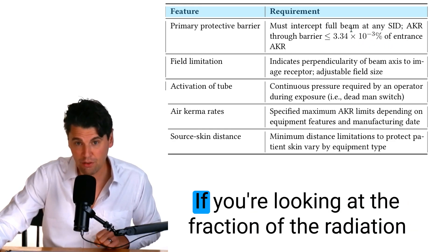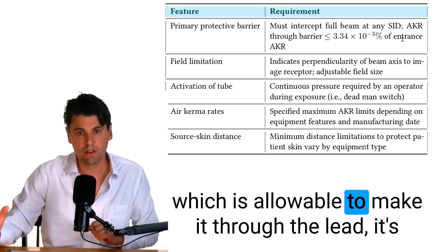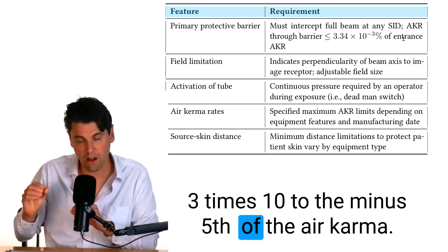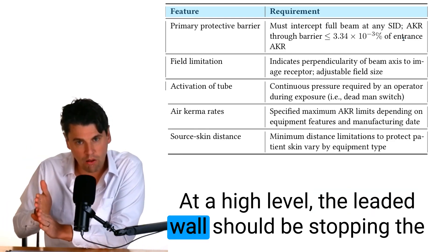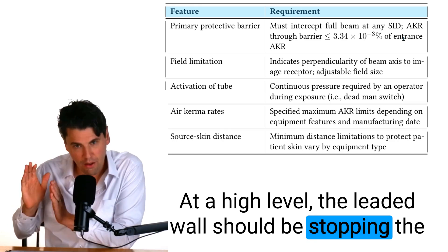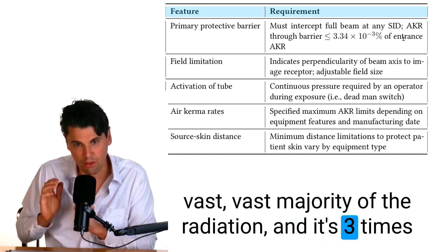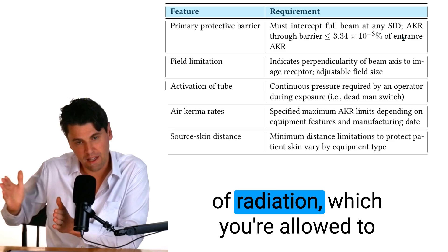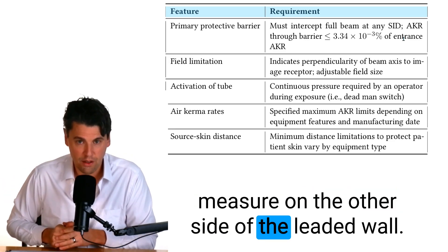If you're looking at the fraction of the radiation which is allowable to make it through the lead it's 3×10^-5 of the air kerma. At a high level the leaded wall should be stopping the vast vast majority of the radiation and it's 3×10^-3 percent of radiation which you're allowed to measure on the other side of the leaded wall.